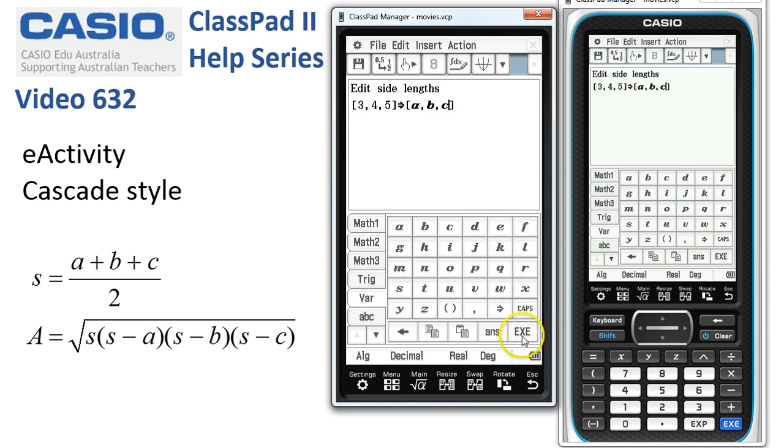As soon as I tap Execute, because we're on a calculation line, ClassPad has now stored the variables A, B and C with the values of 3, 4 and 5.